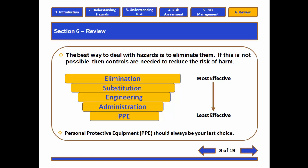We've listed these on the slide in order from most effective to least effective. Obviously, eliminating the hazard is the most effective way to prevent it. Substituting generally minimizes. Engineering controls can minimize. Administrative controls can minimize. And personal protective equipment should always really be your last choice because it's pretty much the least effective way to mitigate the dangers associated with a hazard.